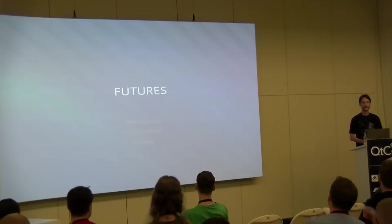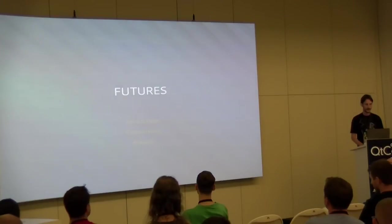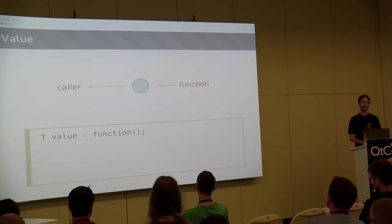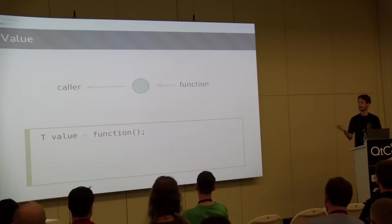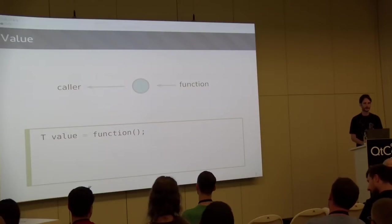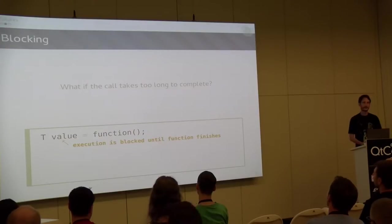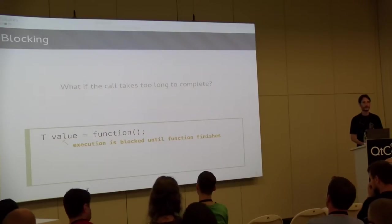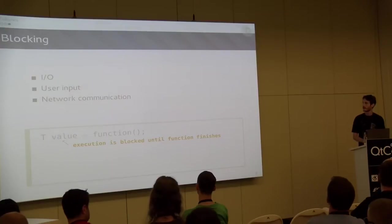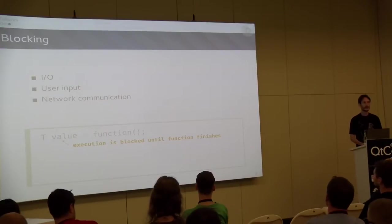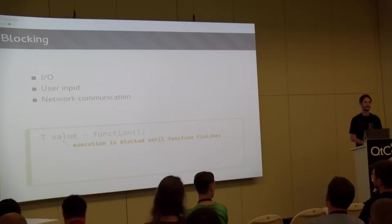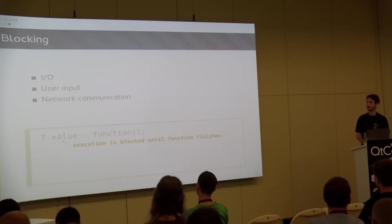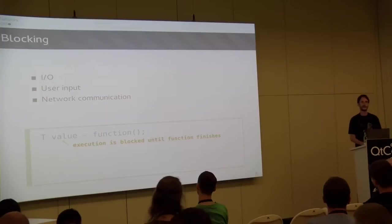So first, let's talk about the future concept itself. The normal way to call a function is: you call it, it completes whatever it's intended to do, it returns a value, and then you can use that value. But what if that function takes a lot of time to complete? What if it's IO - you're asking the user to type something, reading from a drive which can be slow, or doing network communication where you can't guarantee it will happen quickly?